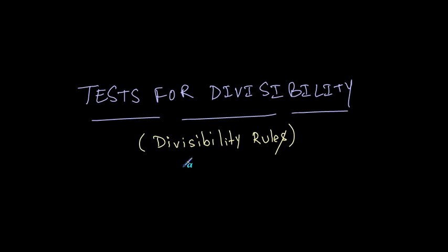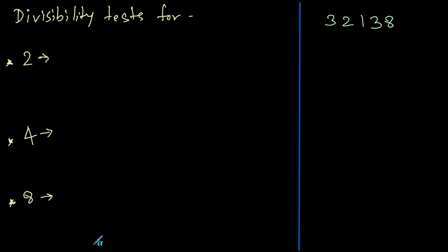In this video, we'll be looking at tests for divisibility, which are divisibility rules or conditions that enable us to determine whether a given number is divisible by some common numbers such as 2, 3, 4, 5, etc. Let's go ahead and check out what these divisibility tests are.